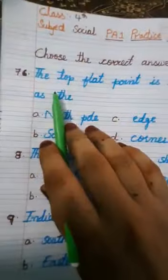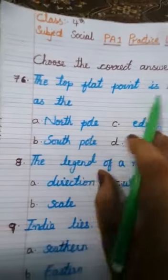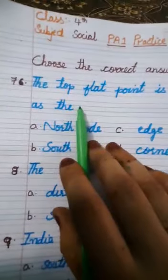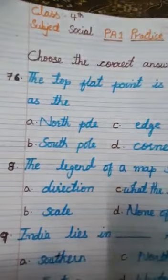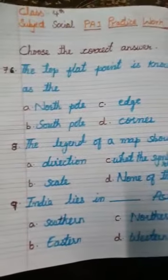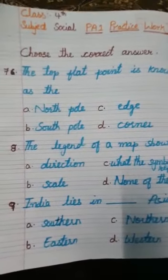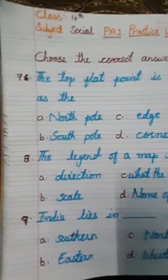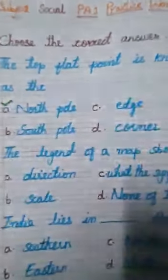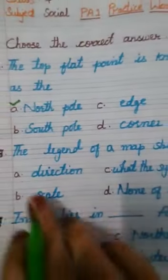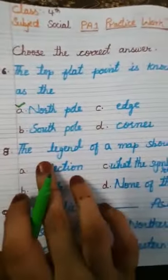The top flat point is known as — options are: north pole, south pole, edge, and corner. So students, what is it? The top flat point is the north pole. Correct. Tick it.